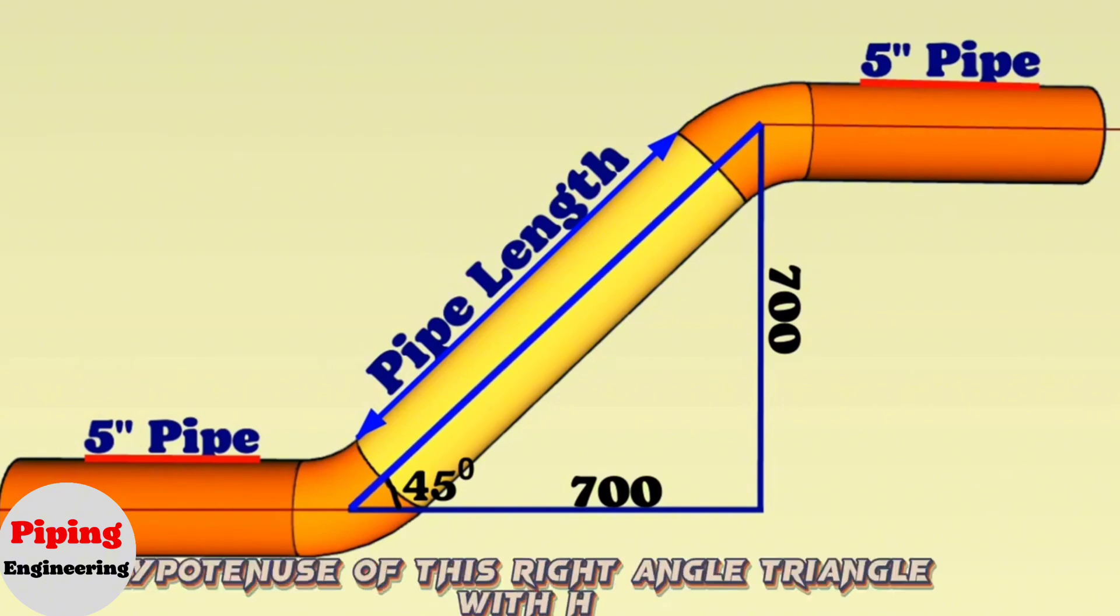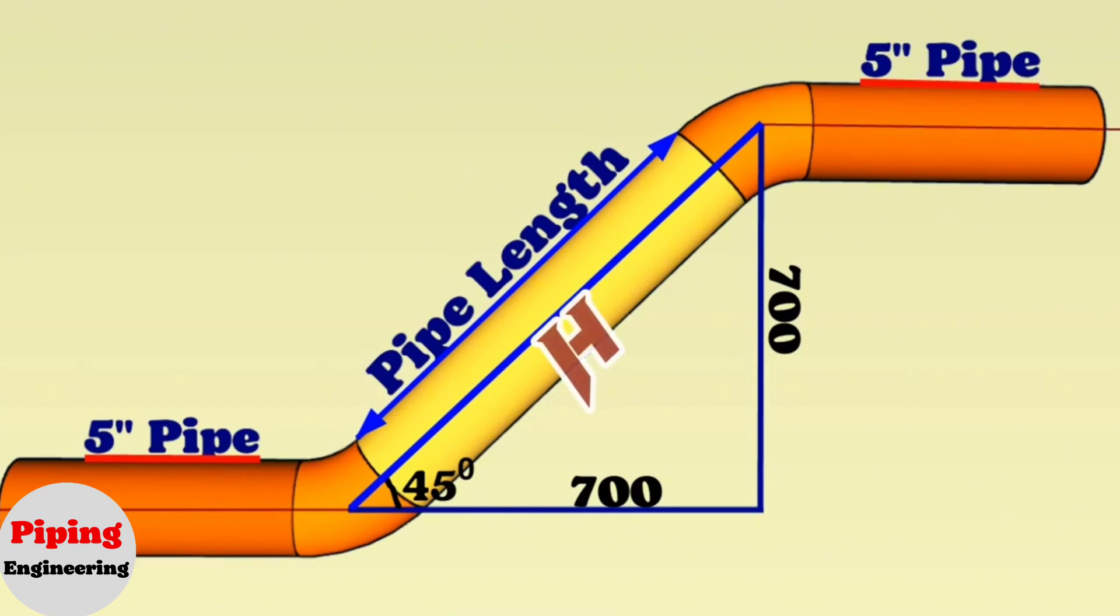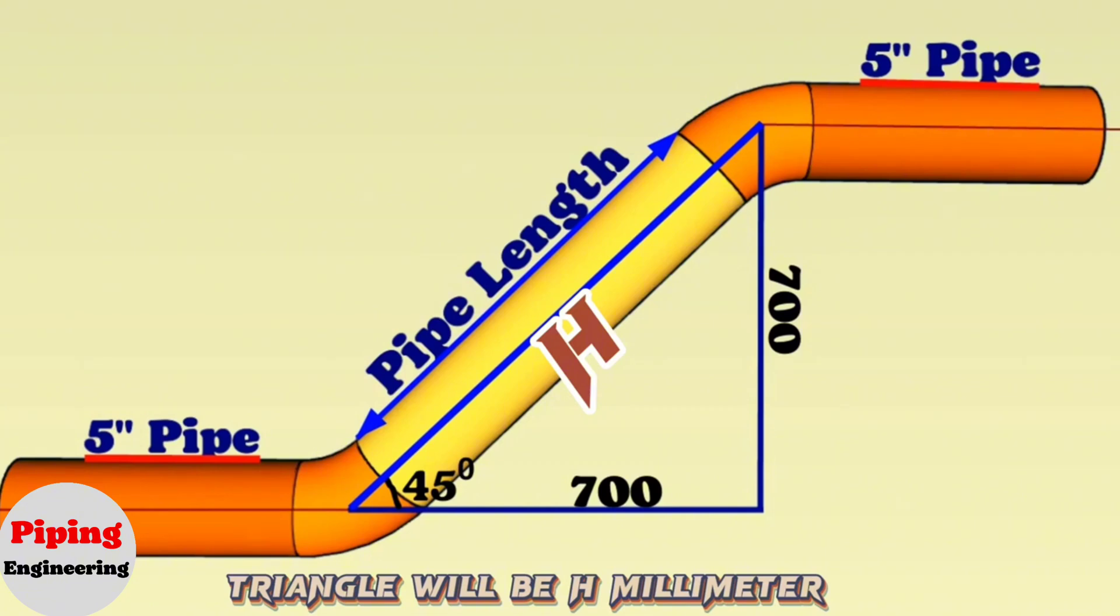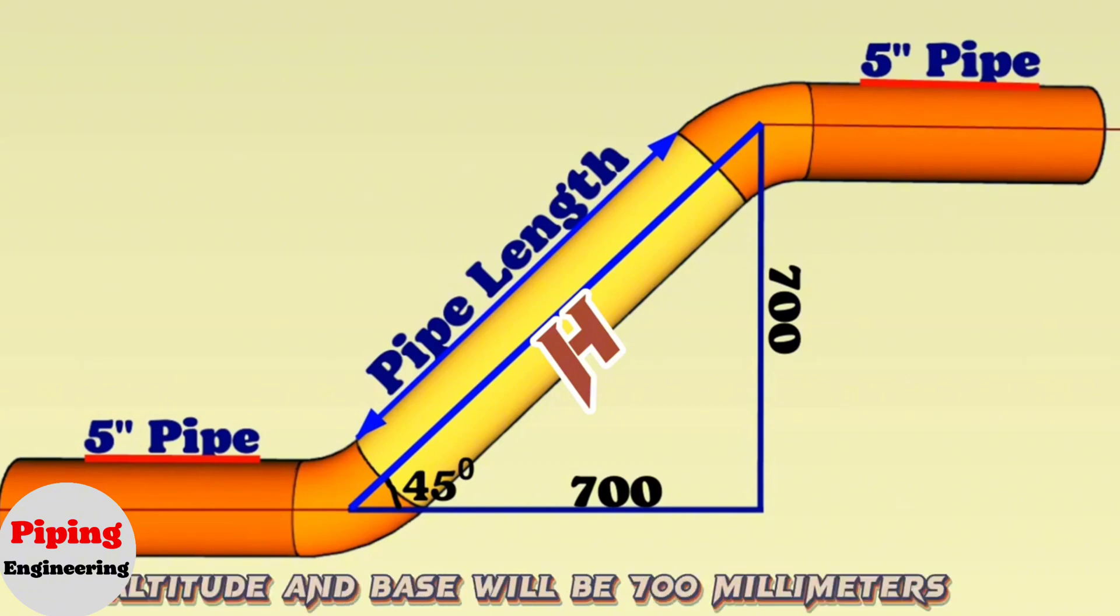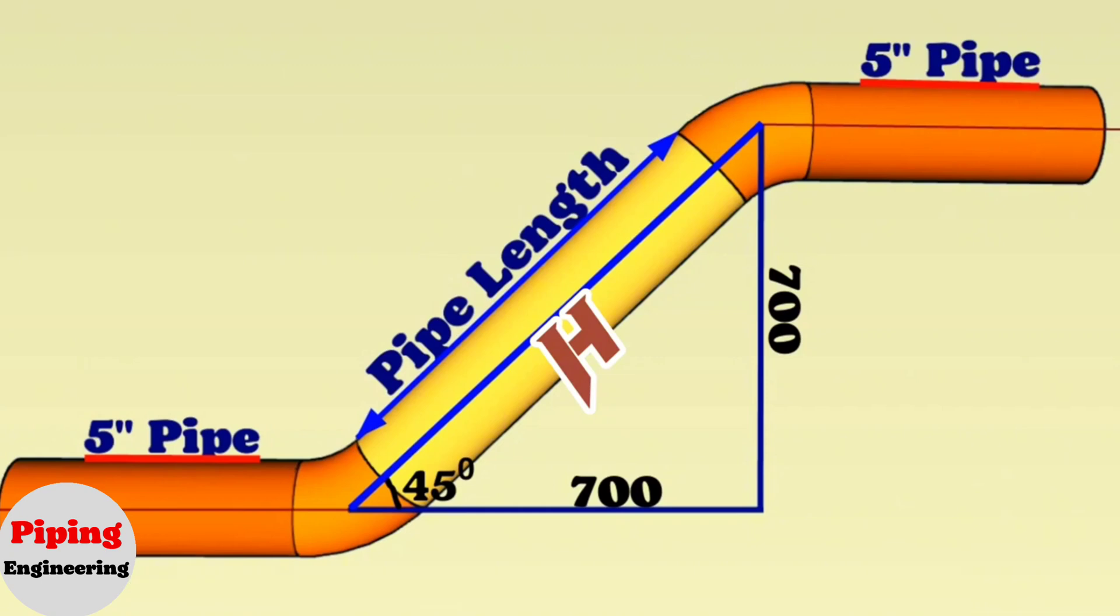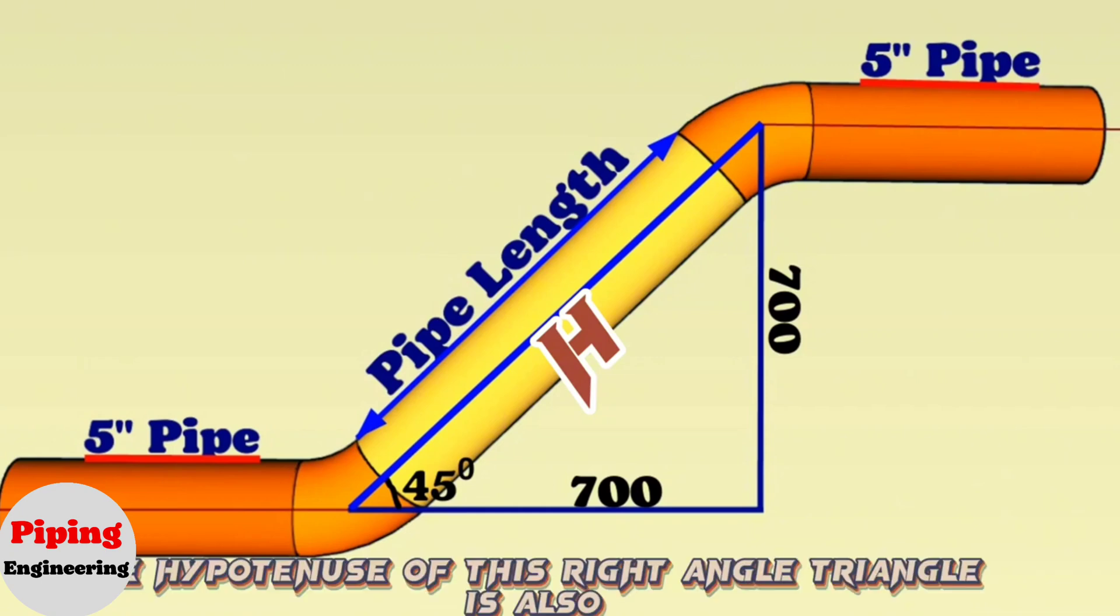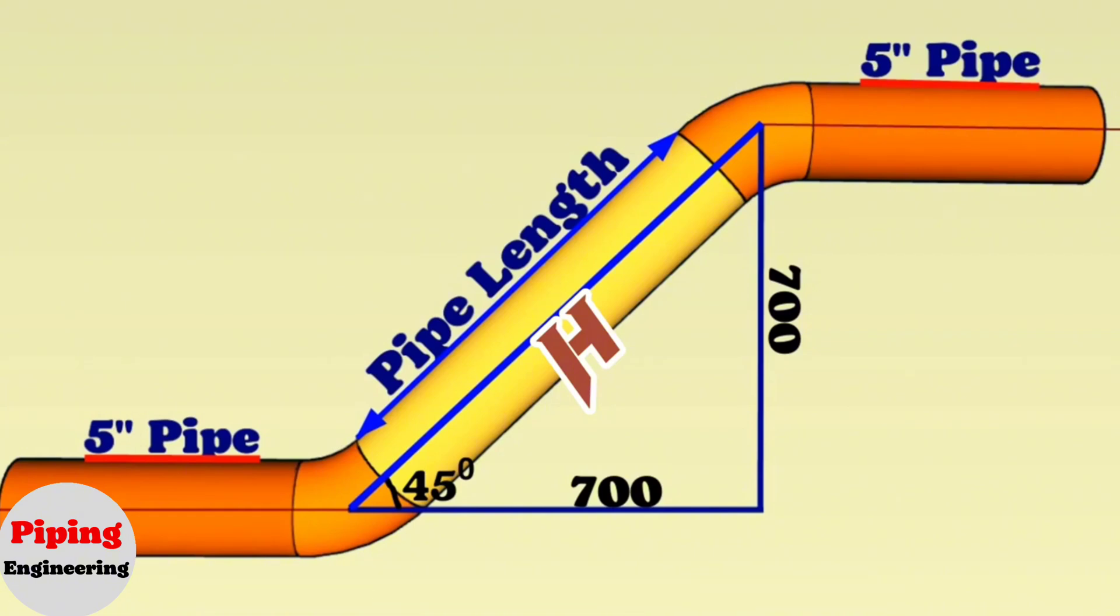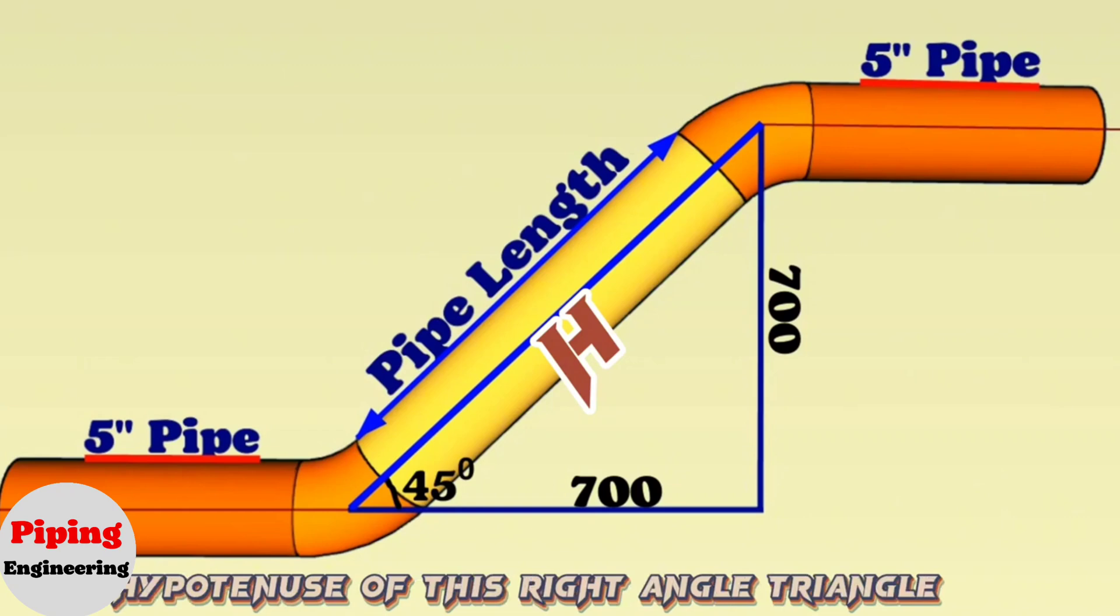Let's mark the hypotenuse of this right-angle triangle with H. Then the hypotenuse of this right-angle triangle will be H millimeters, and the sides, altitude and base, will be 700 millimeters. The hypotenuse of this right-angle triangle is also the distance between the elbows in the pipeline. Let's find out the length of the H-hypotenuse of this right-angle triangle.